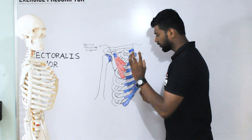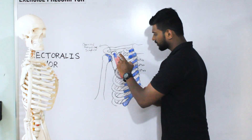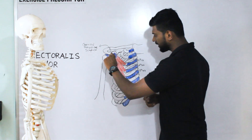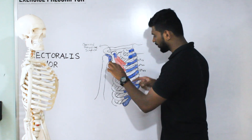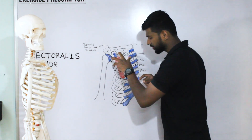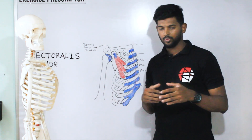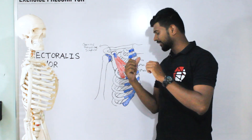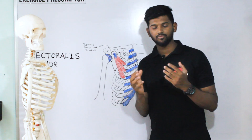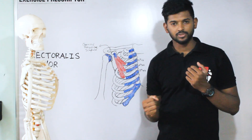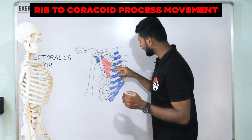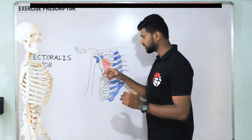When the muscle pulls on the lateral aspect of the scapula, the glenoid cavity tilts downward, producing downward rotation of the scapula. So finally, when the pectoralis minor contracts, it produces a combined movement of protraction, depression, and downward rotation of the scapula.